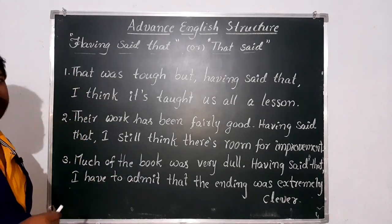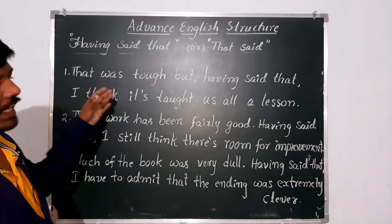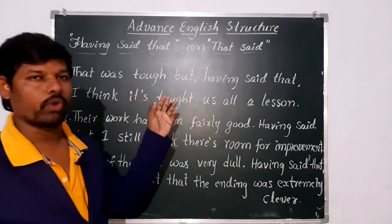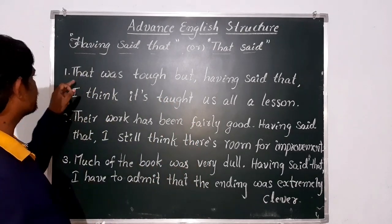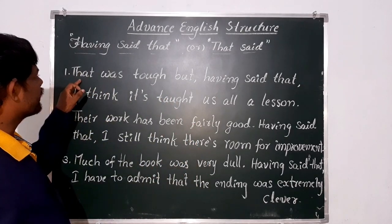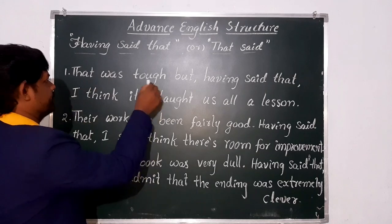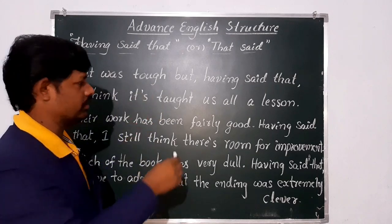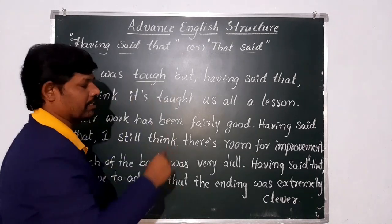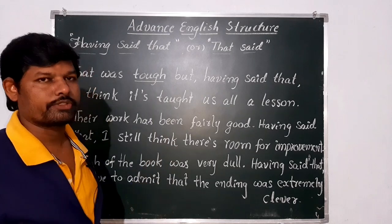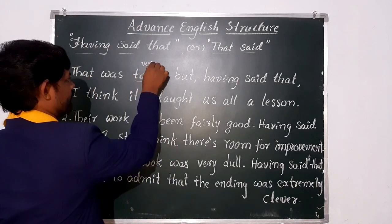For example — let us look at the sentences given here. First one: 'That was tough.' Tough means it's very difficult — very difficult. So, 'that was tough' means that was very difficult, very challenging.